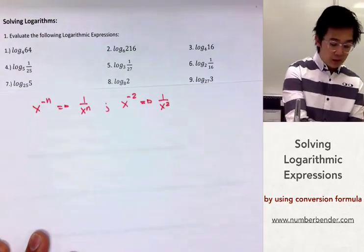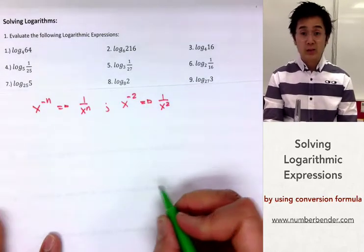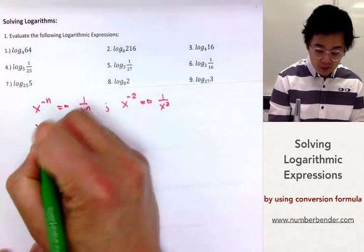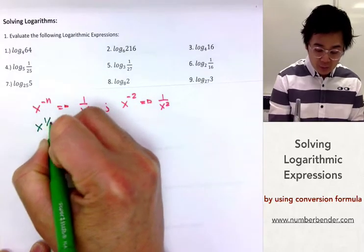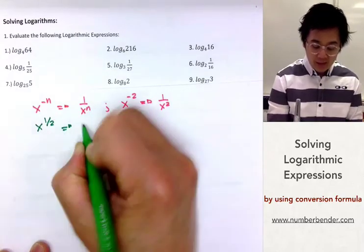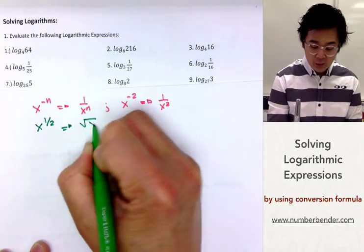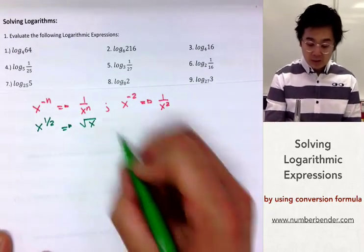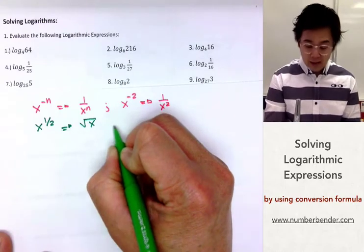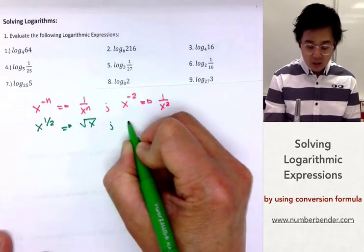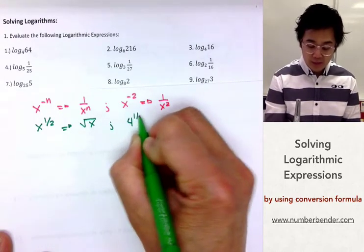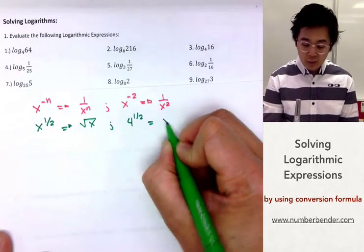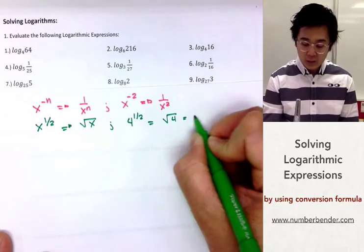Similarly, another law of exponents we're going to be using today is the fractional exponent. If I have x raised to 1 half, we know that x raised to 1 half is the square root of x. So every time we see an exponent of 1 half — for example, 4 raised to 1 half — it's the same as the square root of 4, which is equal to 2.